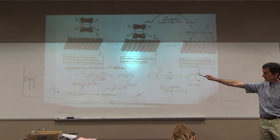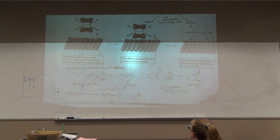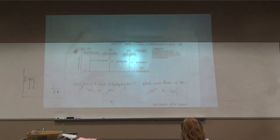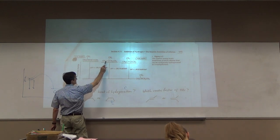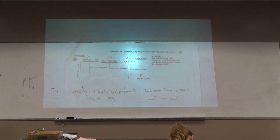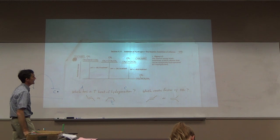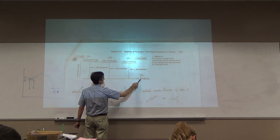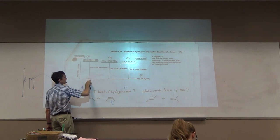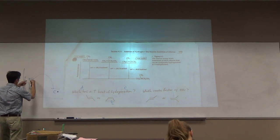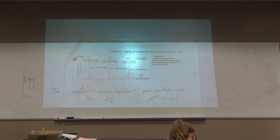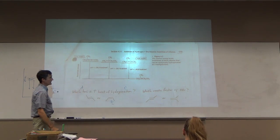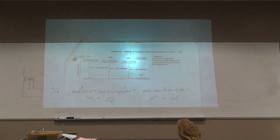The heat given off by both of these reactions - they're both exothermic - that's called the heat of hydrogenation. The same thing we did there is done here again with three different alkenes. Which reaction gives off the most heat when they're hydrogenated? Each of these alkenes gives the same alkane. The most stable gives off the least heat; the least stable gives off the most heat when hydrogenated. Mono-substituted, di-substituted, tri-substituted alkenes in terms of stability - that's the heat of hydrogenation.